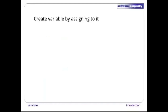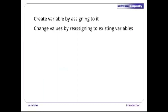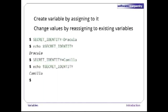Creating a variable is easy — just assign a value to a name using equals. Changing a value is equally easy, just assign a new one. Here, we set our secret identity to be Dracula, check it, change it to Camila, and check again.